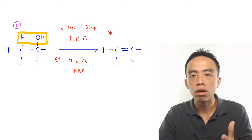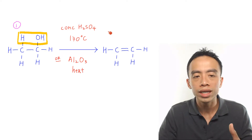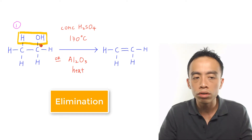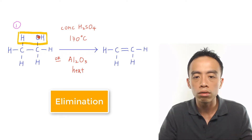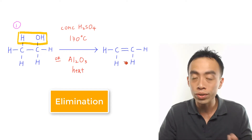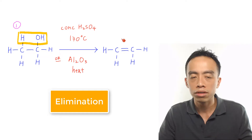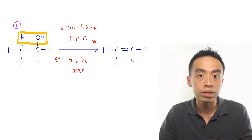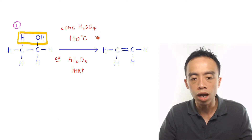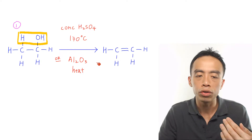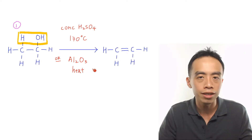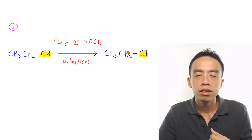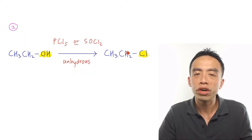The first major reaction of alcohol is the elimination reaction of alcohol to form alkenes. This is done using concentrated H2SO4 at 170 degrees C, or you can use Al2O3 with heat.